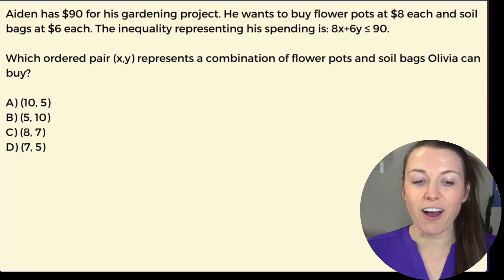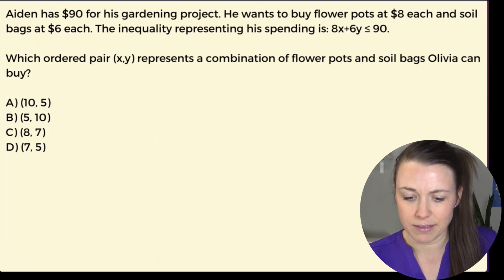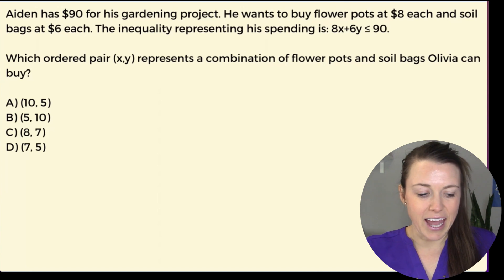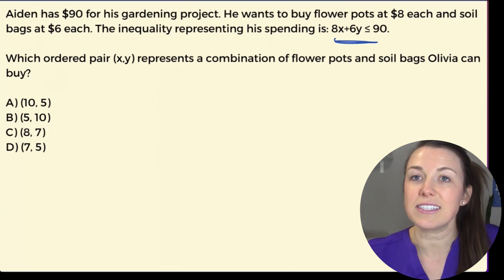Aiden has $90 for his gardening project. He wants to buy flower pots at $8 each and soil bags at $6 each. The inequality representing his spending is 8x + 6y is less than or equal to 90, right? Because he can't buy it if he doesn't have the money. So which ordered pair (x, y) represents a combination of flower pots and soil bags Aiden can buy? Here we have our equation, 8x + 6y is less than or equal to 90. He can go all the way up to $90, they just can't go over because they don't have more.